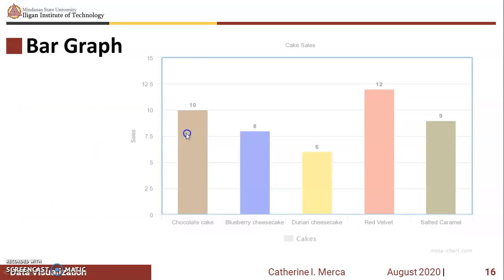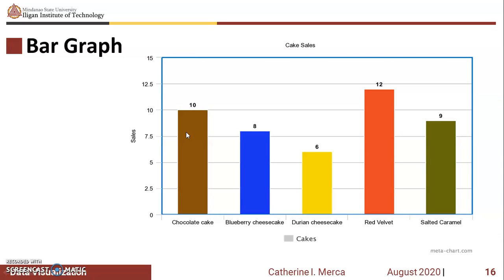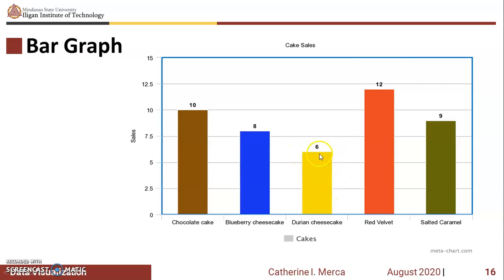What is a bar graph? A bar graph organizes data into rectangular bars so that it is easy to compare related data sets. If you take a look at this example, 12 is the maximum — the most number of cakes that has been sold — and the durian cheesecake is the least number of cakes sold in this cake sales chart.